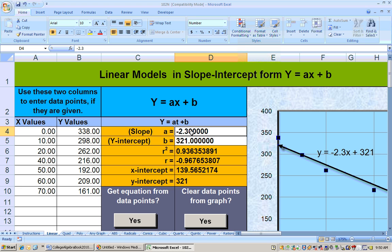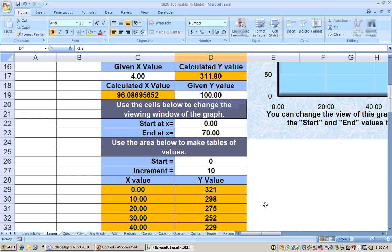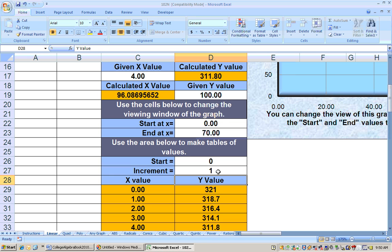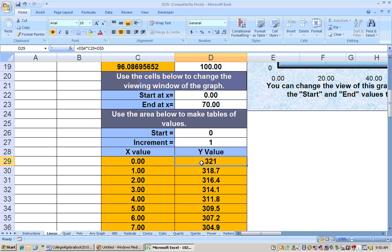The slope is negative 2.3, and that means that, according to this linear equation, each year, the winning time is going down by 2.3 minutes. We could see that if we made a chart down here. We can start at 0 and make the increment 1. Here is what the winning time is predicted to be in 1920, is 321. 1921, the winning time is predicted to be 318.7. That's 2.3 less than 321. Take 2.3 off of it, you get 318.7. Take 2.3 off of this, you get 316.4, and so on. So each year, the winning time is going down by 2.3 seconds.